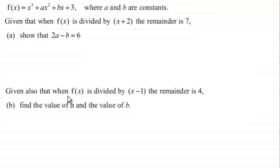And then later we're given also that when f(x) is divided by x minus 1 the remainder is 4, and we've got to go on to find the value of a and the value of b. So if you'd like to give this a go, if you haven't tried it already, just give you a moment to pause the video.